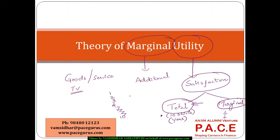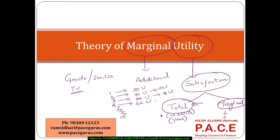For example, if I have one shirt, my total utility is 20 units. When I buy the second shirt, total utility becomes 30 units, so marginal utility is 10 units. With the third shirt, total utility becomes 38 units, so marginal utility is 8 units. With the fourth, total utility becomes 42 units — marginal utility is only 4. With the fifth, total utility is 43, so marginal utility is only 1. With the sixth, total utility stays at 43, meaning marginal utility is 0.